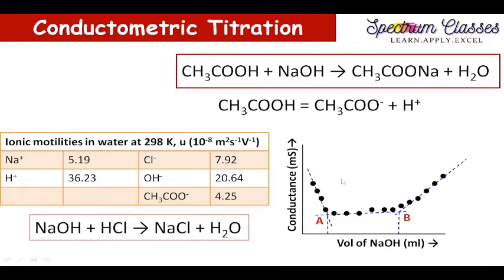So that kind of decreasing graph we are having. After the equivalence point of HCl — note that equivalence point means when H+ is exactly equal to OH−, whereas end point means when OH− is slightly higher than H+ ions — so here we are talking about equivalence point, not end point. This is the difference between conductometric titration and normal titration. We are having a decrease in conductivity value initially, and this equivalence point for HCl is given by point A.